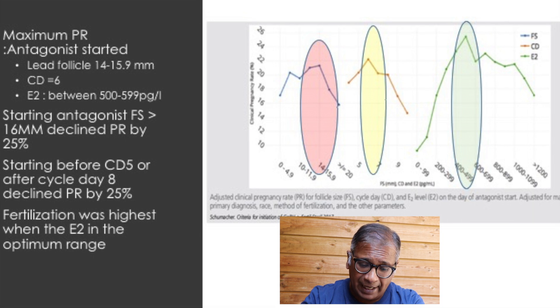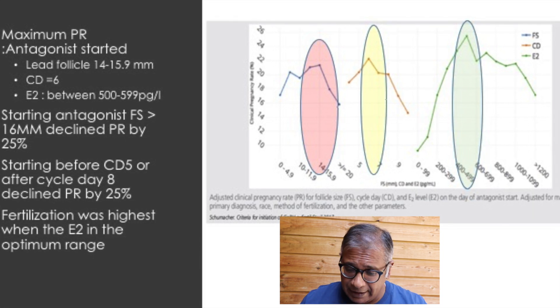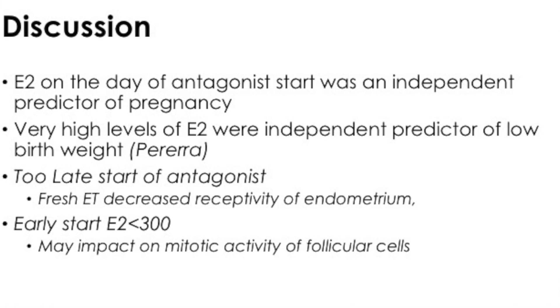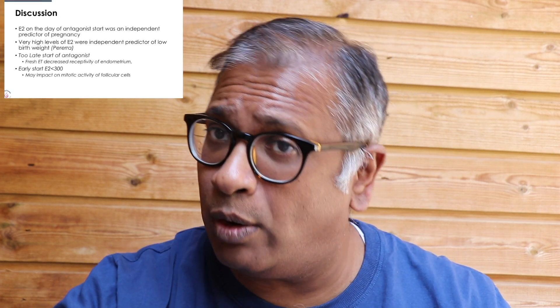Fertilization was highest when the estrogen was in the optimal range. Estrogen seems to be an independent predictor of success rates in this study with the antagonist start. There were very high levels of E2 also demonstrated to be associated with lower birth weight babies. The later you start the antagonist, you may lose the receptivity window, and if you start very early when estrogen is very low, it may affect the mitotic activity of follicular cells.